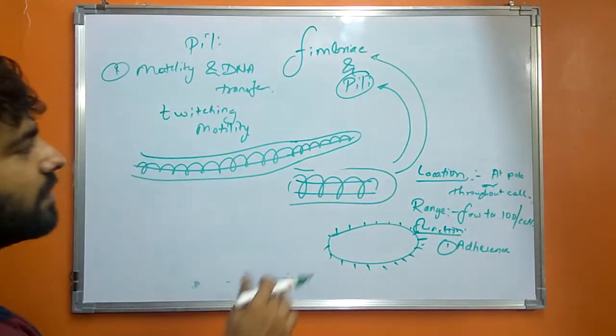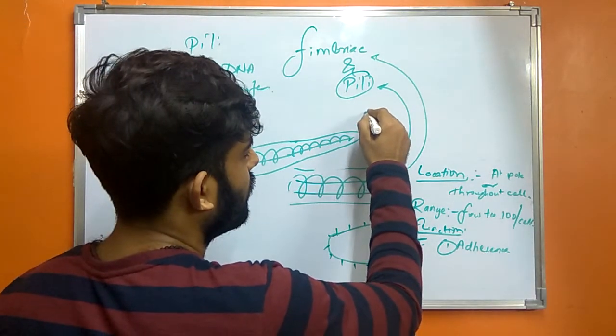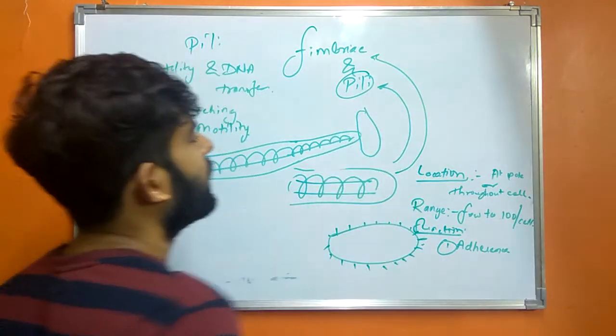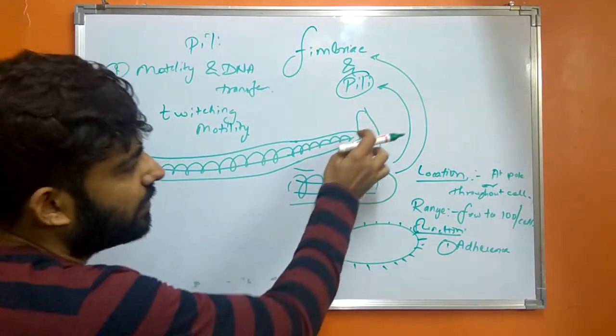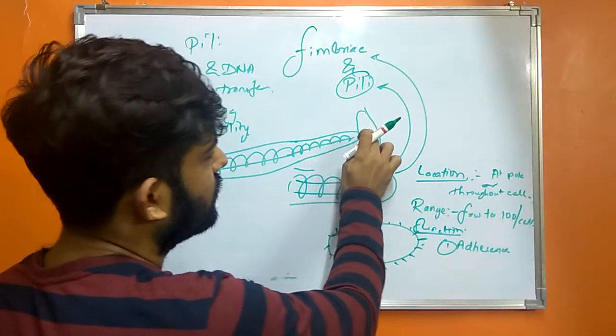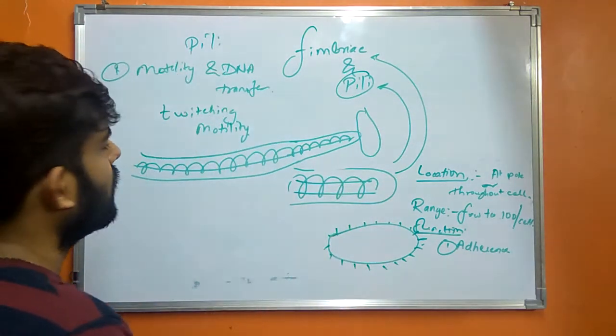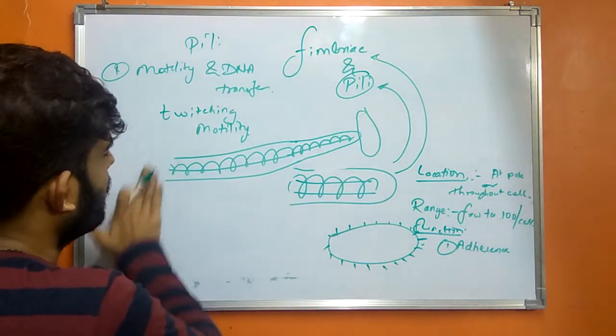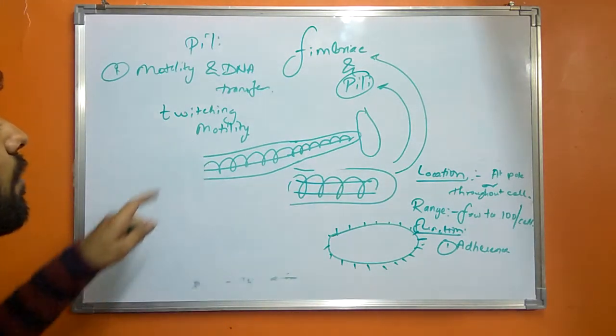So once this end attaches to a cell or a surface, there is a disassembly of the pilin protein, thereby decreasing the length of the Pilli.